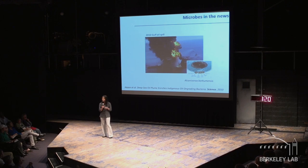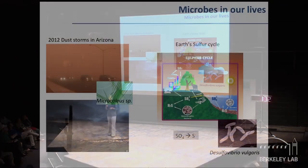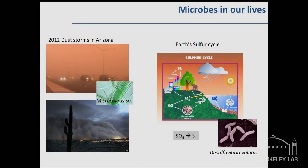Alcanivorax borcumensis is a very famous microbe now, and there are a lot of people studying it, trying to understand why it does what it does and when it will do what it does. But this is hardly the only organism that is our secret friend in the environment.